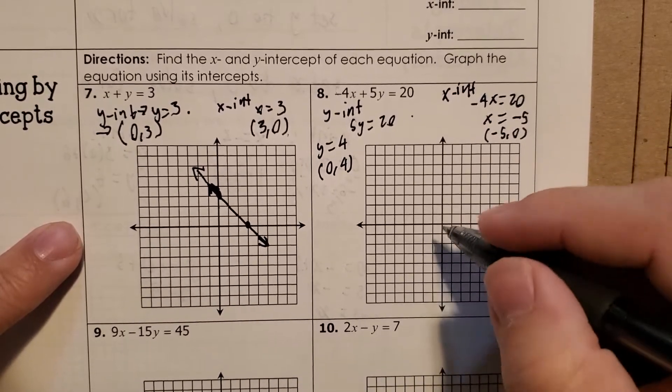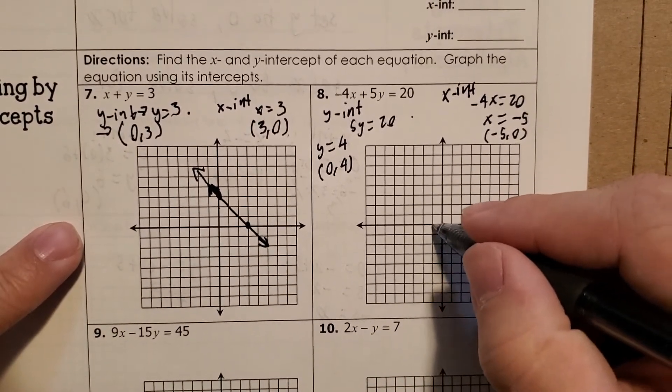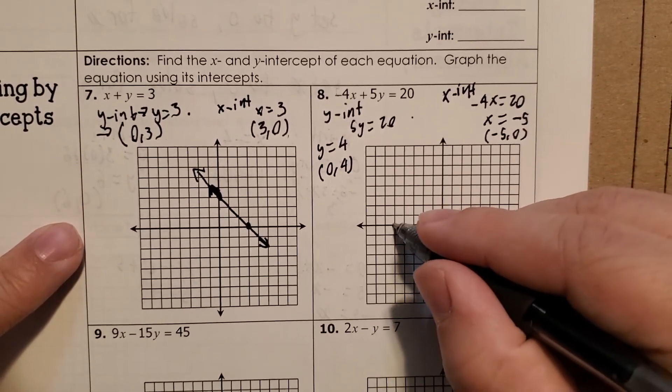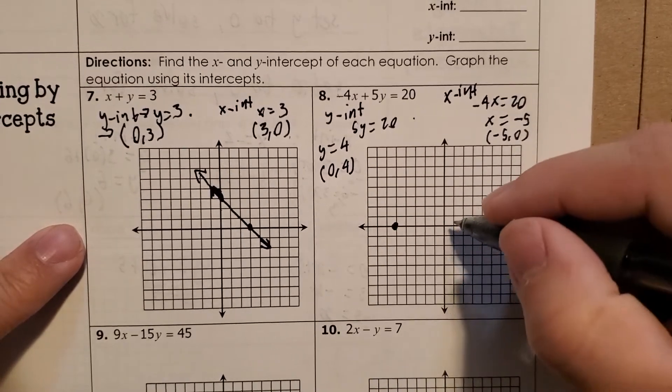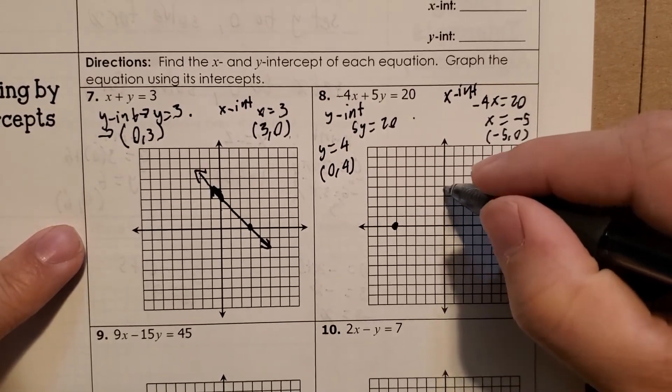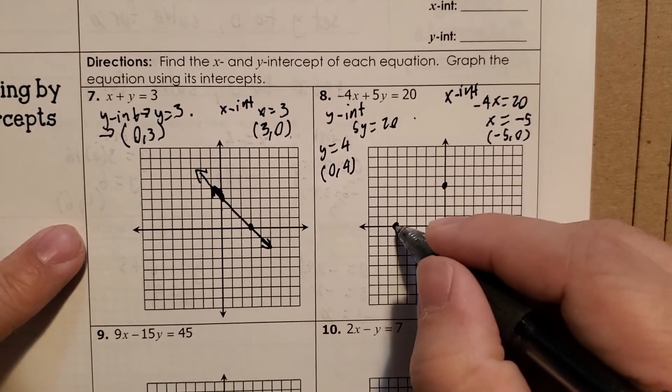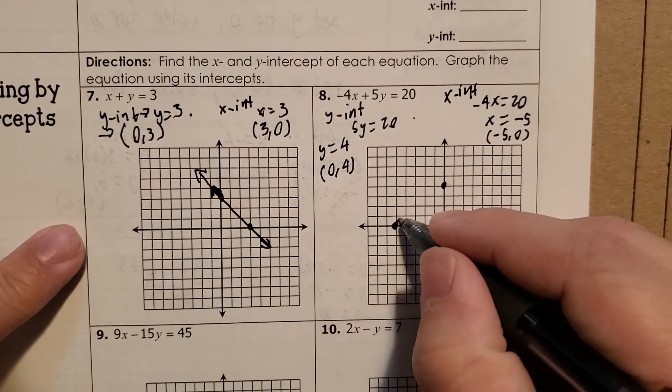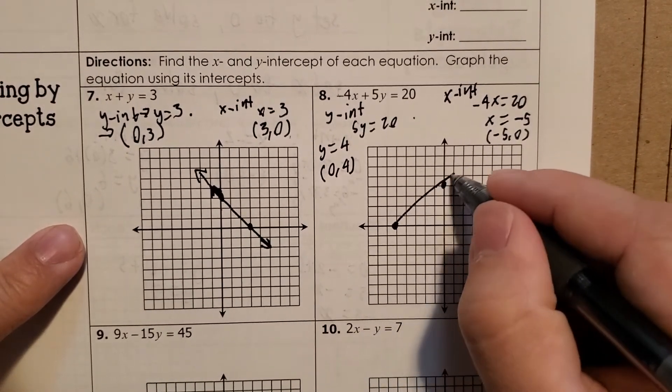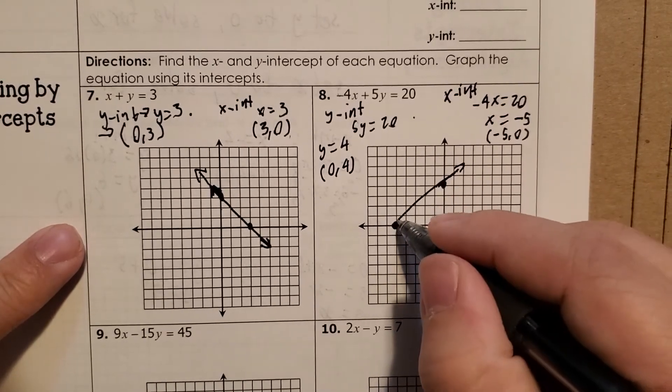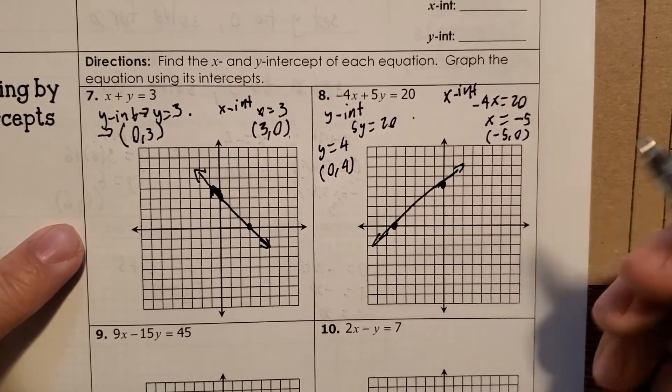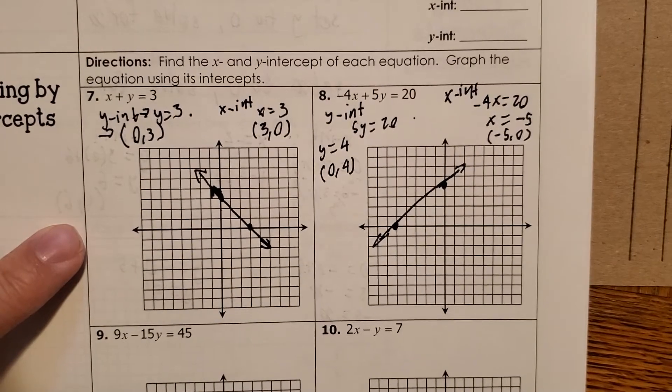And then again, here we go. Let's start plotting them down. So negative 5, 1, 2, 3, 4, 5. And then 1, 2, 3, 4. And then same idea. You just draw your line. Oh, that's a little bit off. Again, this is why you should be using a ruler if possible. But something along those lines.